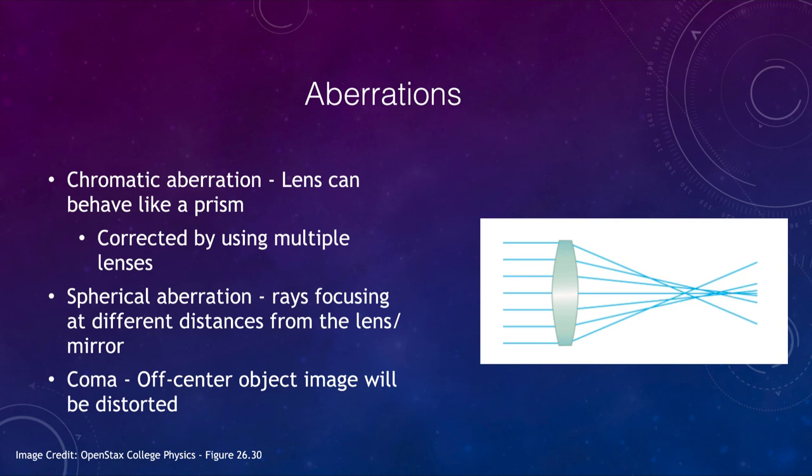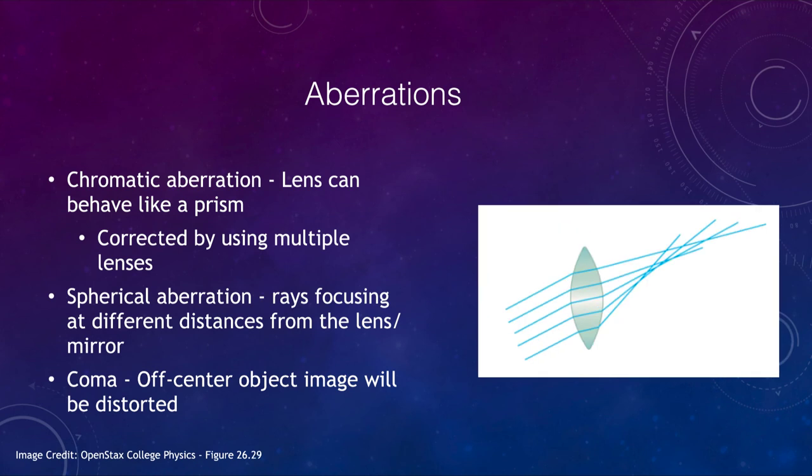The last one is what we call coma. Coma is an off-centered object. Objects that are off-center will end up being distorted. If you're looking straight at an object it comes through and is focused fine. But an object that's off to the side of the lens when its light comes through gets all distorted. These are just some of the problems that can be associated with telescopes and that can be minimized or eliminated through the use of various types of lenses.